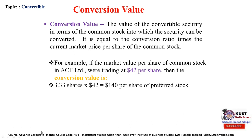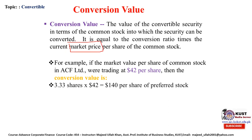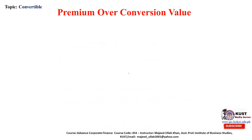Conversion value is based on market value or share price. It is the value of the convertible security in terms of the common stock into which it can be converted at the prevailing market price. It equals the conversion ratio multiplied by the market price per share. The market price is available from stock exchange quotations. For example, if the market price per share of ACF Limited common stock is $42, then the conversion value is 3.3 times $42, which equals $140 per preferred share.